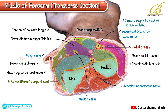Close to the ulnar nerve, on its lateral side, we find the ulnar artery, which runs in relation to the flexor digitorum profundus. Both the radial and ulnar arteries are terminal branches of the brachial artery, providing the main arterial supply to the forearm.